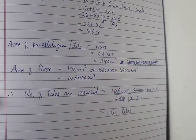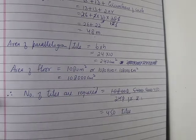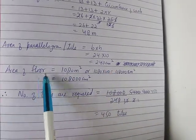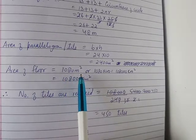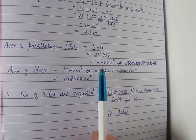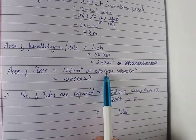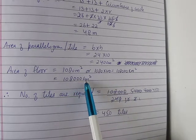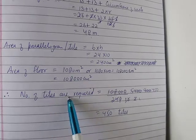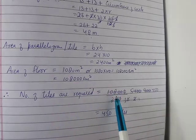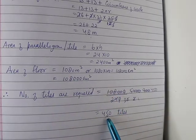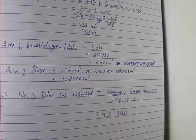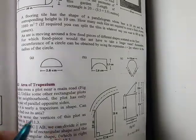The area of a parallelogram is base times height, which gives 240 square centimeters. The area of the floor is 1080 square meters, which equals 10,800,000 square centimeters. The number of tiles required is 45,000 tiles.